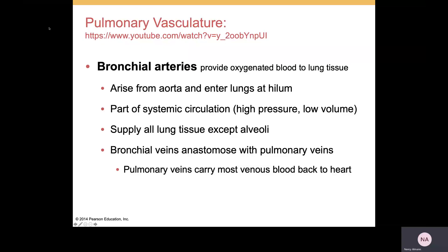For actual blood supply and drainage of the lungs themselves, bronchial arteries bring oxygenated blood to the lung tissue. They arise from the aorta and enter the lungs at the hilum. They are part of systemic circulation — not pulmonary circulation — carrying high-pressure blood of relatively low volume. They supply all lung tissue except the alveoli. Bronchial veins anastomose with the pulmonary veins, which carry most of the venous blood back to the left atrium.